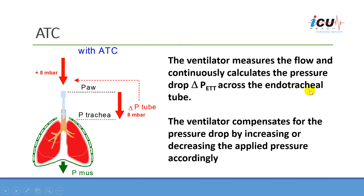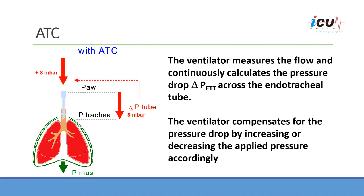The ventilator measures the flow and continuously calculates the pressure drop across the endotracheal tube, then compensates for that pressure drop by increasing or decreasing the applied pressure accordingly. For example, if that pressure drop is 8 centimeters of water between the proximal end and the distal end of the tube, the machine will add 8 centimeters of water as pressure support to overcome the airway resistance.